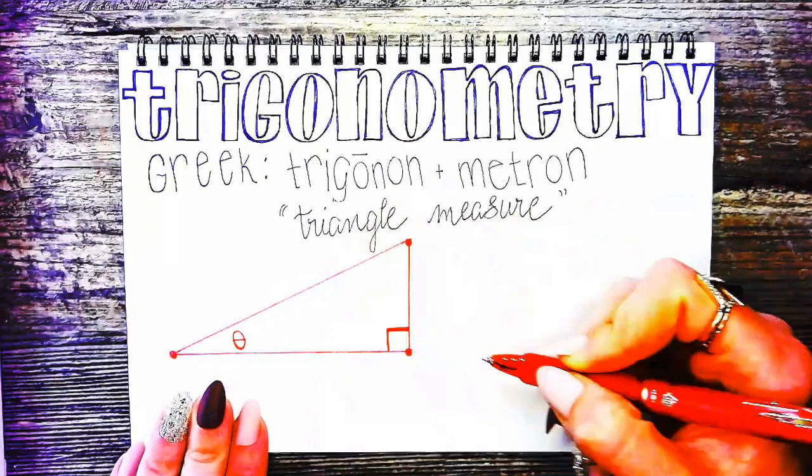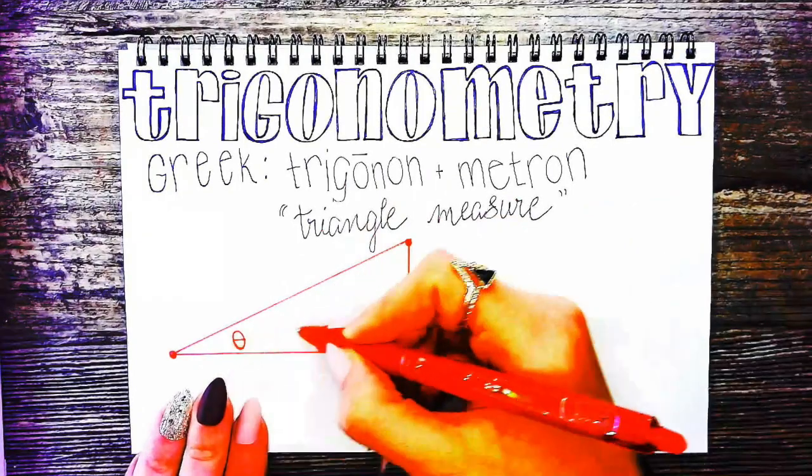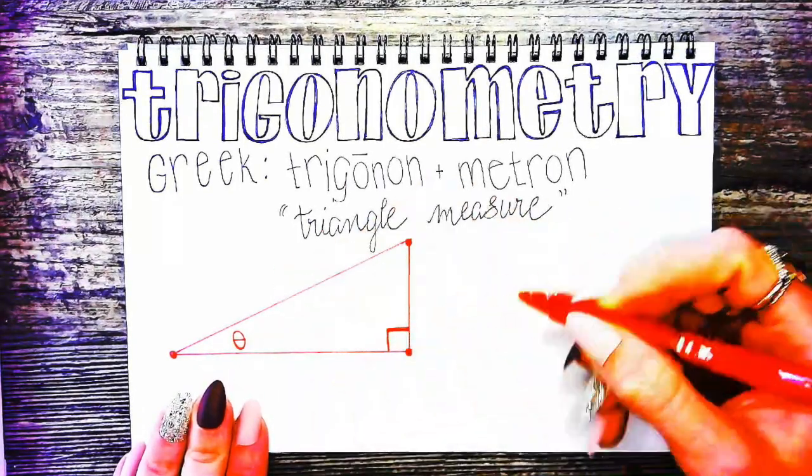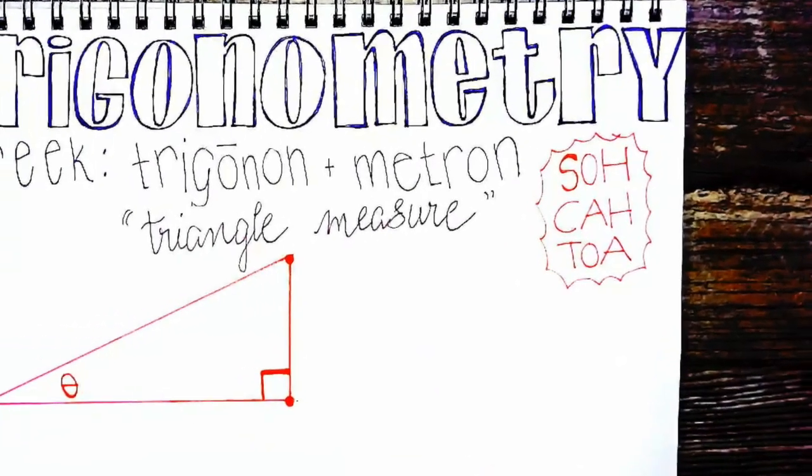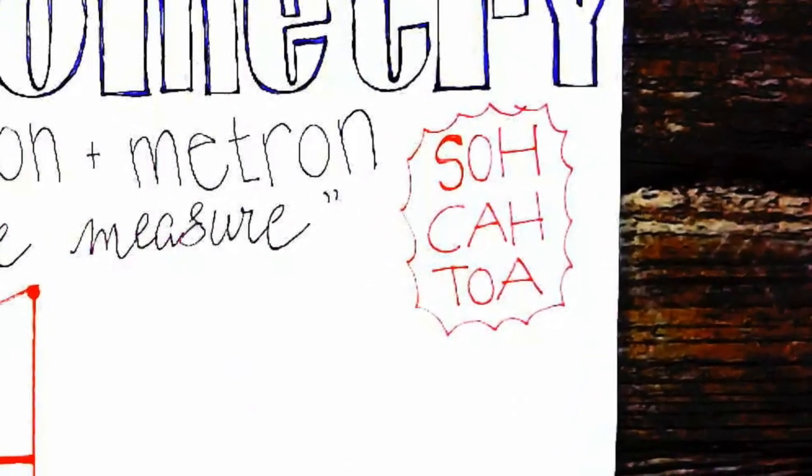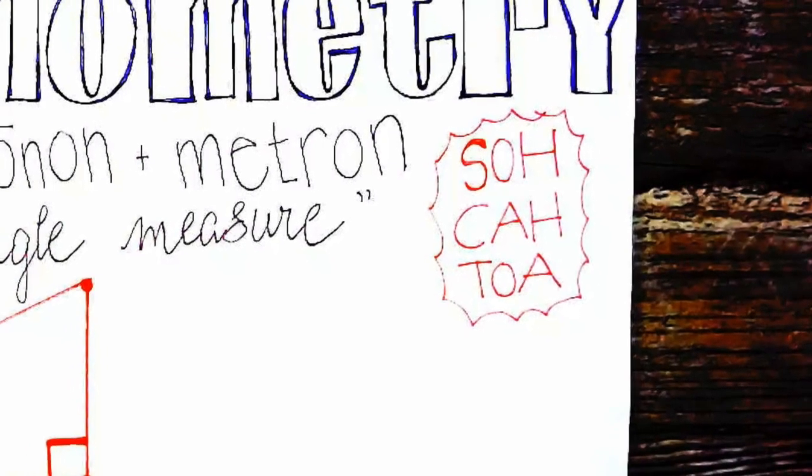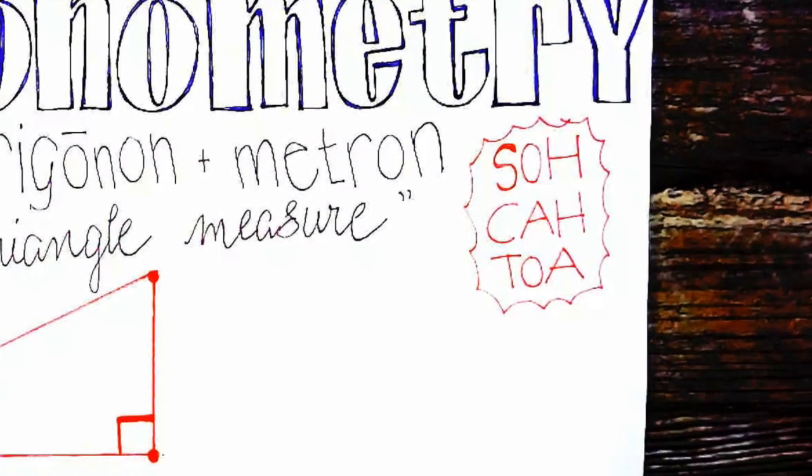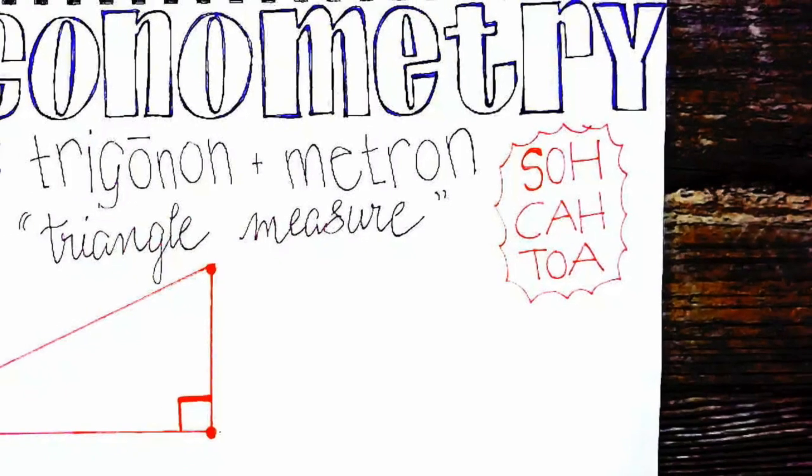When you hear the word trigonometry, you probably think of geometry and when you learned SOHCAHTOA. SOHCAHTOA is a mnemonic device we use to help us with right triangle trigonometry. Right triangle trigonometry obviously only directly pertains to right triangles.